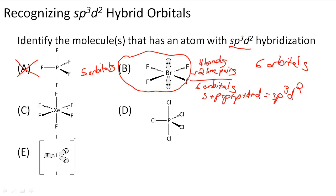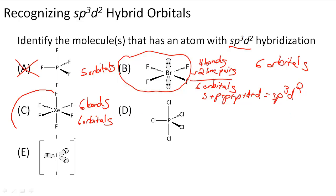C has 1, 2, 3, 4, 5, 6 bonds, and that means 6 orbitals as well. That means it's going to have an sp3d2 hybridization. So C also counts.